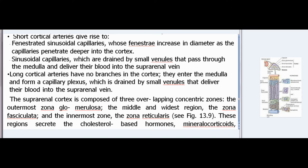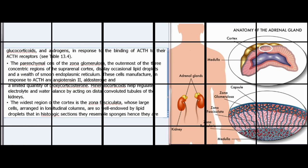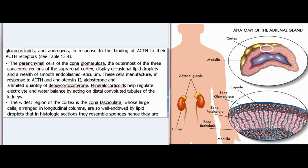The suprarenal cortex is composed of three overlapping concentric zones: the outermost zona glomerulosa, the middle and widest region the zona fasciculata, and the innermost zona reticularis (Fig. 13.9). These regions secrete cholesterol-based hormones — mineralocorticoids, glucocorticoids, and androgens — in response to ACTH binding to their ACTH receptors (Table 13.4). The parenchymal cells of the zona glomerulosa display occasional lipid droplets and a wealth of smooth endoplasmic reticulum; in response to ACTH and angiotensin II, they manufacture aldosterone and a limited quantity of deoxycorticosterone.